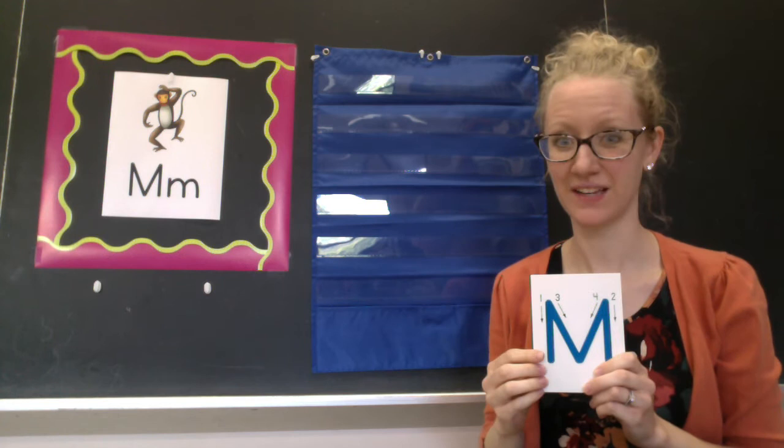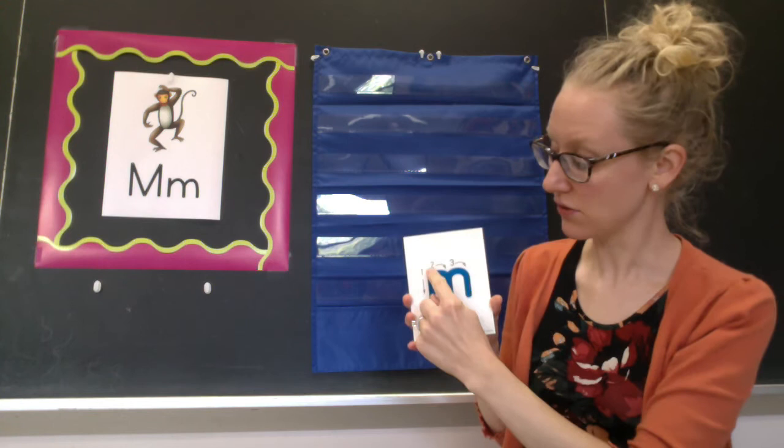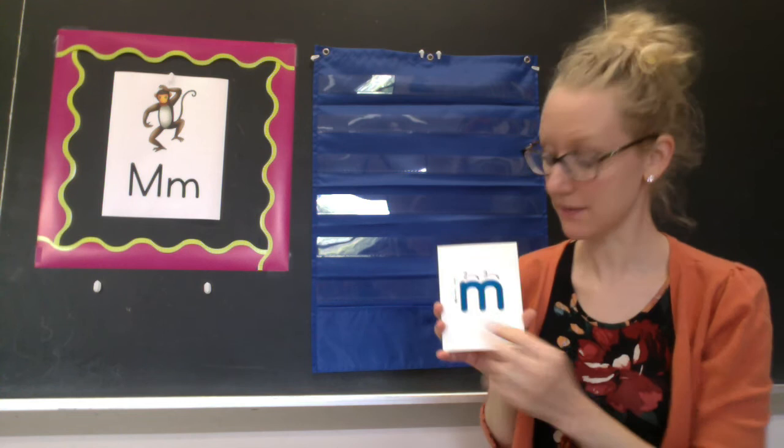Let's try lowercase M. You start in the middle of your lines. You come down and up, make one bump, and two bumps. Watch one more time. Come down and up, one bump, two bumps.